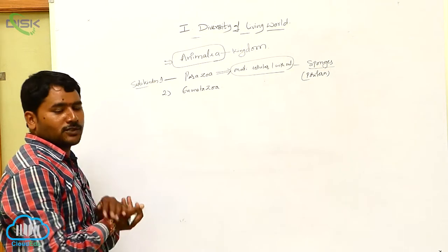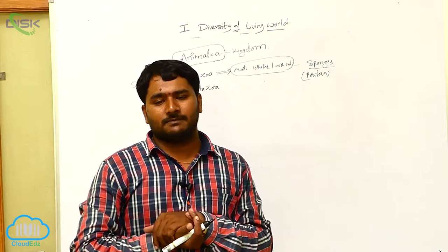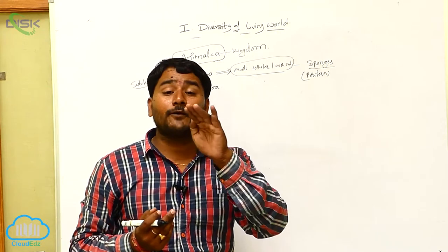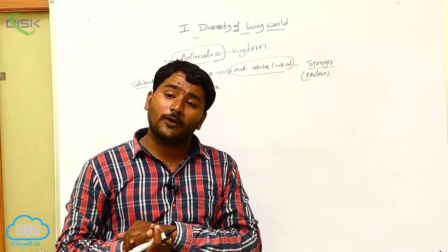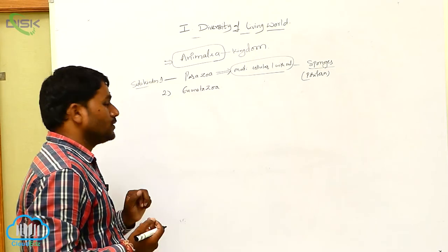Next one is Eumetazoa. Eumetazoans are multicellular organisms with well-defined tissues. These are multicellular organisms with the formation of well-defined tissues.